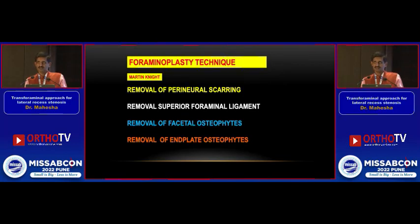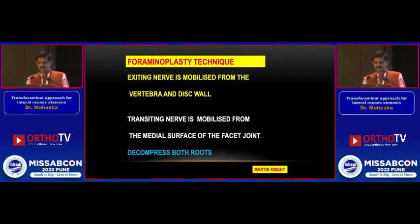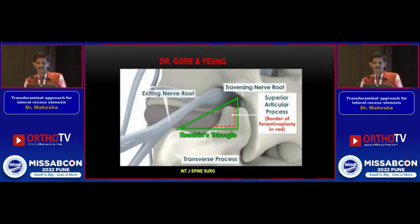Martinite described this foramenoplasty technique which involves decompressing both the exiting and the traversing roots. For this we need to remove the superior foraminal ligament. We have to remove the facet osteophytes and end plate osteophytes and do decompression from pedicle to pedicle. The aim is to decompress both the roots. This slide from Dr. Gorey and Dr. Young shows the area marked red, which is the bone resection.